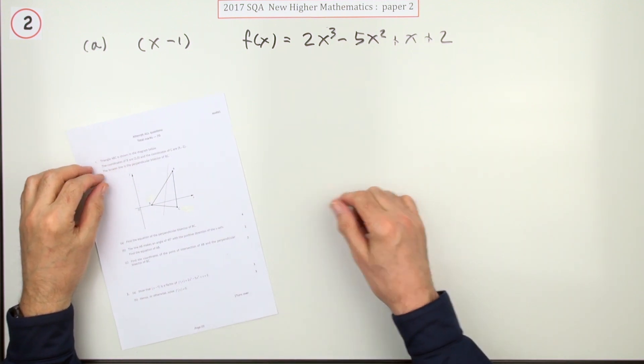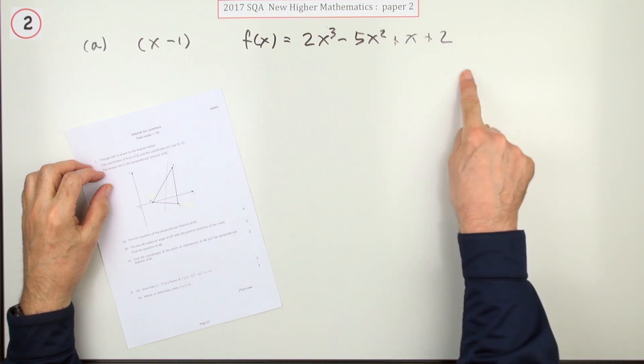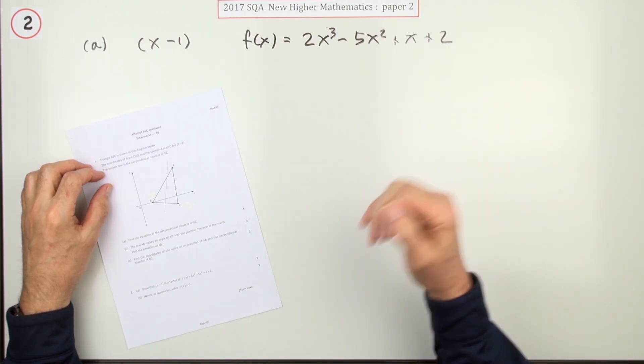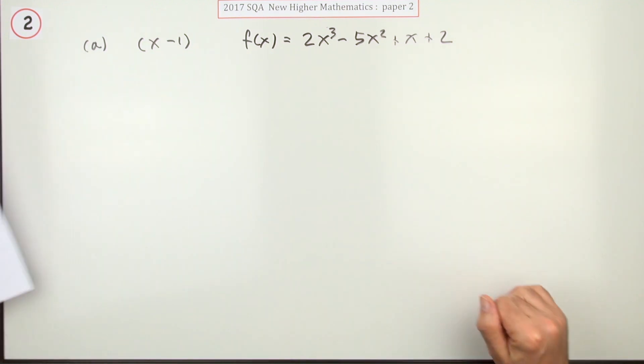Number two, this one's for five marks. Part a: show that x minus one is a factor of this expression here for two marks. Part b: solve this equation equal to zero.